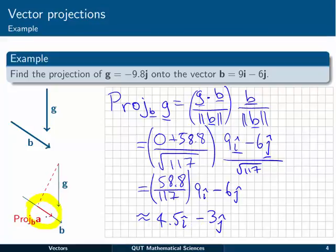Having a look at the red vector over here, the projection onto b of the vector g, looks like it's about right. Positive, and then down in the j direction.